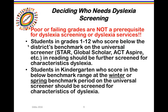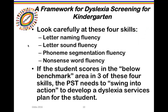For students in grades 1 through 12, any of the three yearly benchmark screenings can trigger a dyslexia screening. In kindergarten, the framework considers four skills: letter naming fluency, letter sound or initial sound fluency, phoneme segmentation fluency, and nonsense word fluency. If the student scores in the below-benchmark area in three of these four skills, the PST needs to develop and consider the components necessary to provide appropriate dyslexia services.